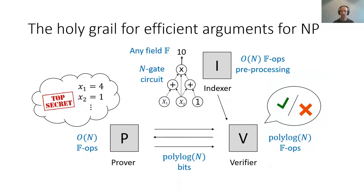We can hope for even better verification time if we introduce an indexer who does a one-time preprocessing of the circuit, so that the verifier doesn't have to read the circuit, and then we can aim for polylogarithmic verification time. But of course, we still want the preprocessing done by the indexer to cost no more than a linear amount of time in the size of the circuit.